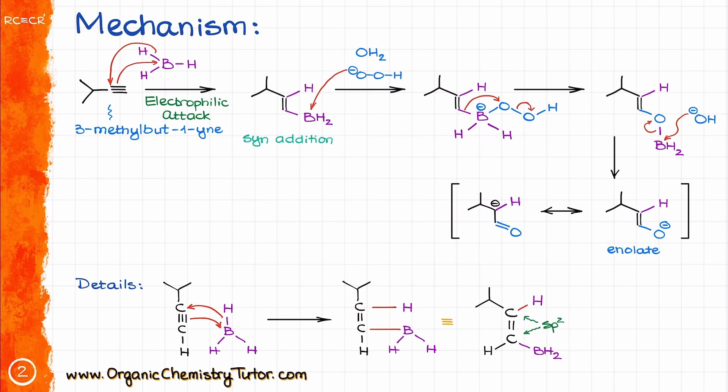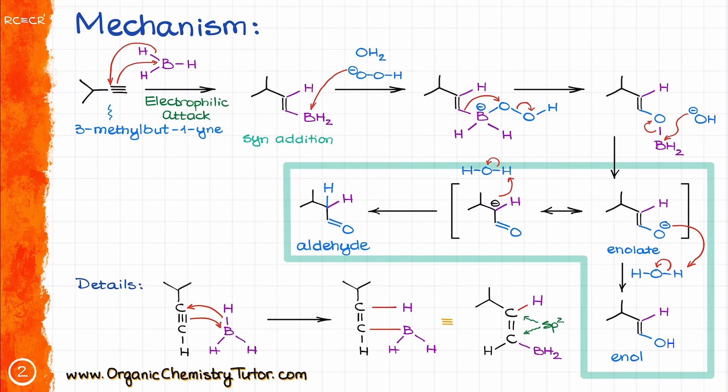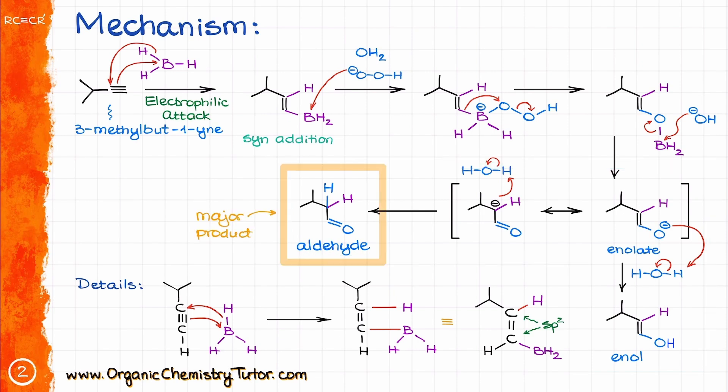This enolate is stabilized by resonance. The major resonance contributor is going to be the one with the negative charge on the oxygen, rather than the one with the negative charge on the carbon. However, we need to keep in mind that the resonance structures are representations of exactly the same molecule. This means that when we protonate our molecule to make it neutral, we can add a proton to the carbon atom or to the oxygen atom. The former gives us the aldehyde product, while the latter gives us the enol product. This part of the mechanism is nothing but base-promoted keto-enol tautomerism in disguise, since the proton transfer steps are reversible. And since the carbonyl form is more prevalent in the keto-enol tautomerism equilibrium, the aldehyde here is going to be the major product.